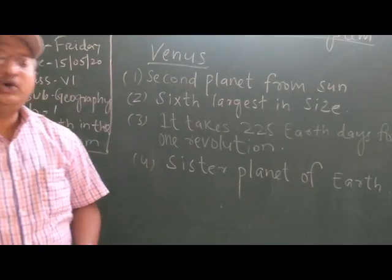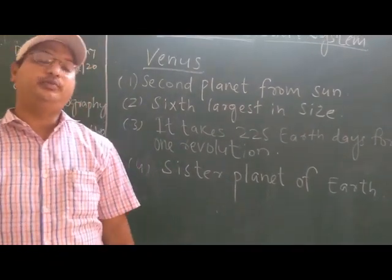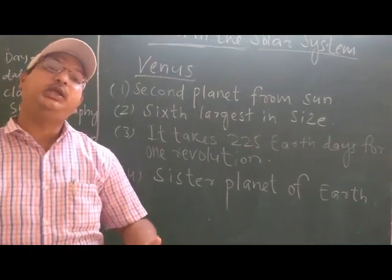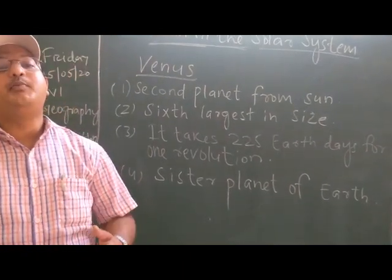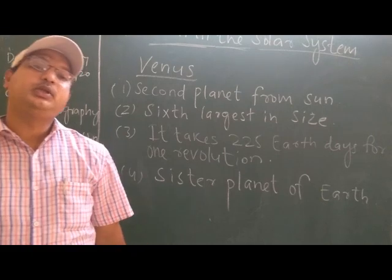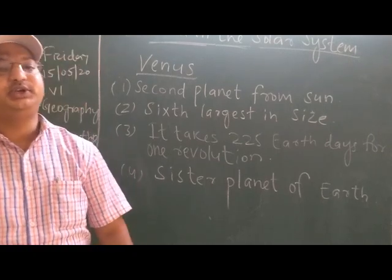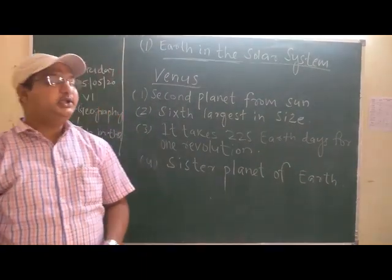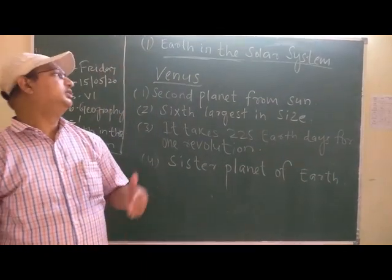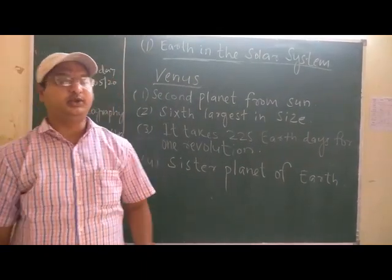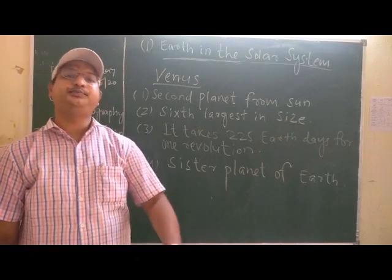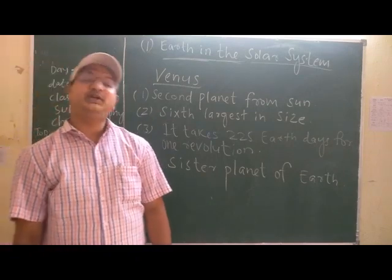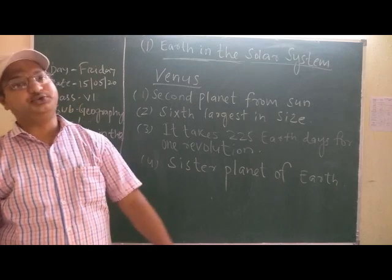A simple way to memorize the names of the planets is: 'My Very Efficient Mother Just Served Us Nerds.' It means: the first is Mercury, then Venus, then Earth, then Mars, then Jupiter, then Saturn, then Uranus, and then Neptune.